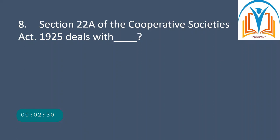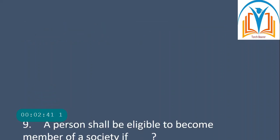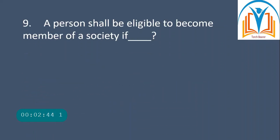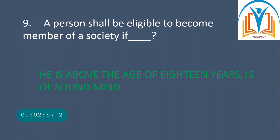Section 22A of the Cooperative Societies Act 1925 deals with audit. Question number nine: a person shall be eligible to become a member of a society if he is above the age of 18 years and has a sound mind.